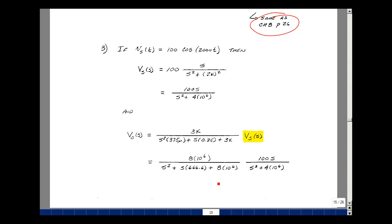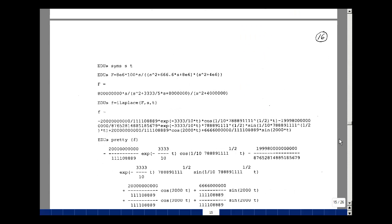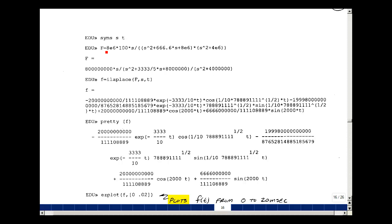This is challenging to find the inverse Laplace transform of, but let's use MATLAB. We'll declare our symbolic variables, which are S and T. Here's our expression: 8 times 10 to the sixth times 100S divided by the quantity S squared plus 666.6S plus 8 times 10 to the sixth, multiplying that by S squared plus 4 times 10 to the sixth. Hit enter, it echoes back the expression. Check for typing errors. Then let's take the inverse Laplace transform.